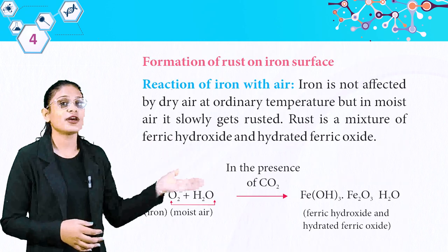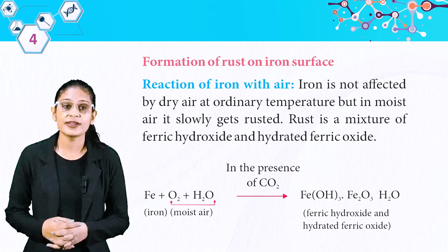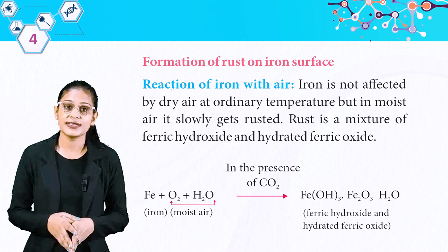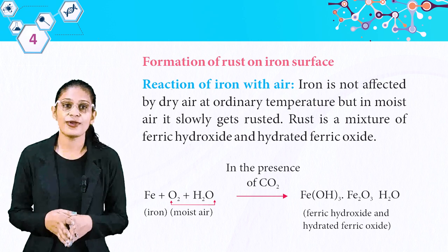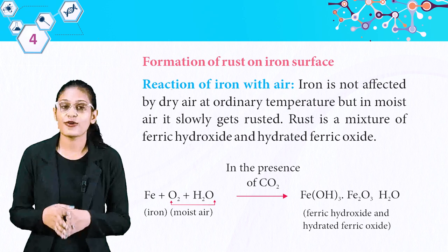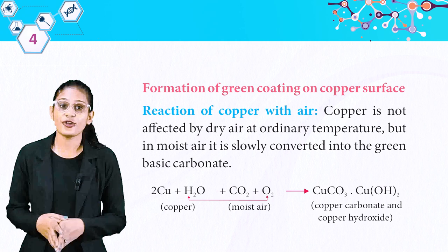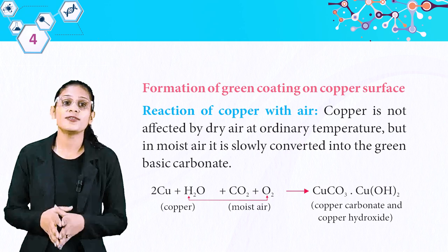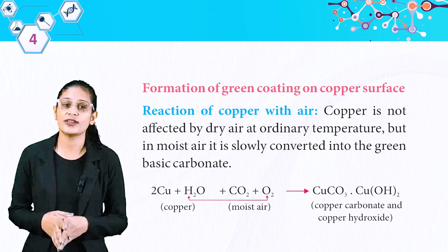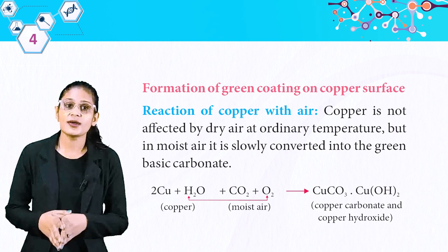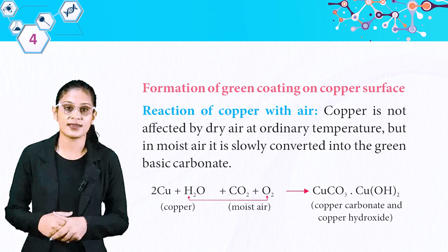Formation of rust on iron surface — reaction of iron with air: iron is not affected by dry air at ordinary temperature, but in moist air it gets slowly rusted. Rust is a mixture of ferric hydroxide and hydrated ferric oxide. Formation of green coating on copper surface — reaction of copper with air: copper is not affected by dry air at ordinary temperature, but in moist air it is slowly converted into green basic carbonate.